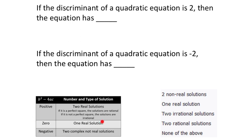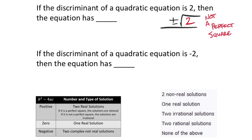I'm going to keep this table on the screen. You've got these options for these two problems — just fill in the blank. If the discriminant of a quadratic equation is 2, then in your quadratic formula you'd have plus or minus the square root of 2. The square root of 2 is not a perfect square, so the solutions are real but irrational. So we take the option: two real solutions that are irrational.